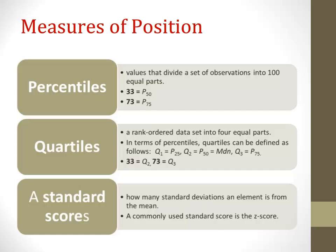So knowing this, what can we say about the score of 73? We could say that 75% of individuals scored below 73 and 25% of individuals scored above 73.